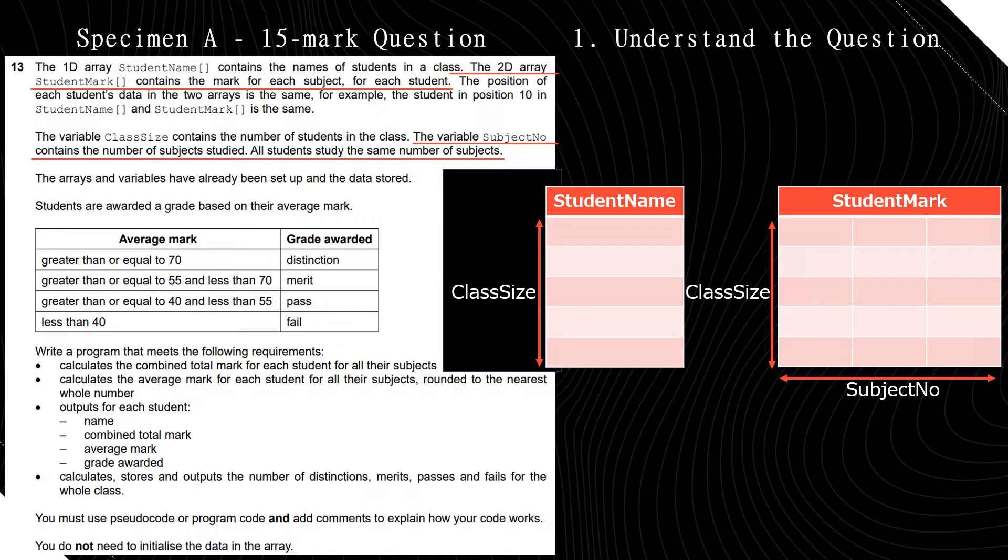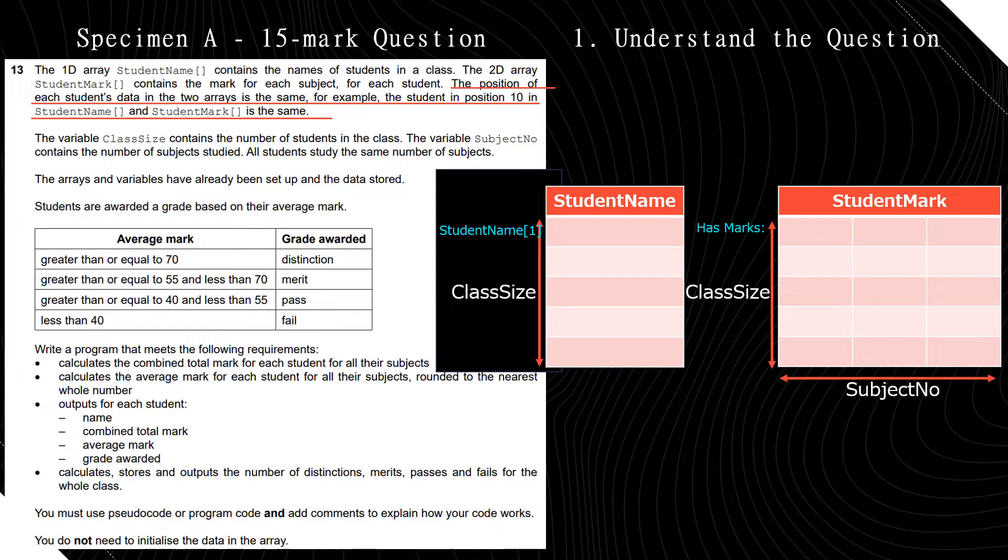And then they also said that student name 1 has the marks that are in student mark 1,1, 1,2, and 1,3, for example, if you have subject number 3.